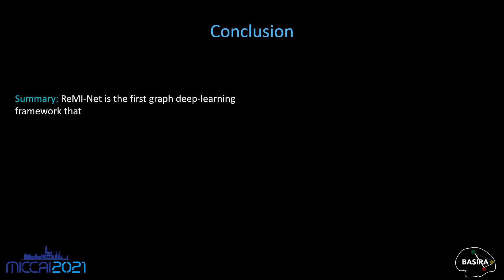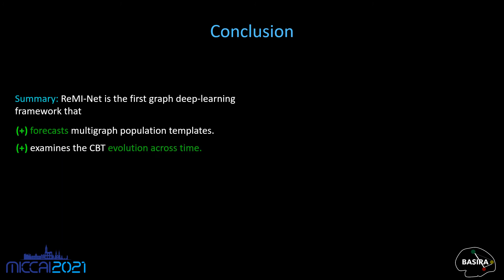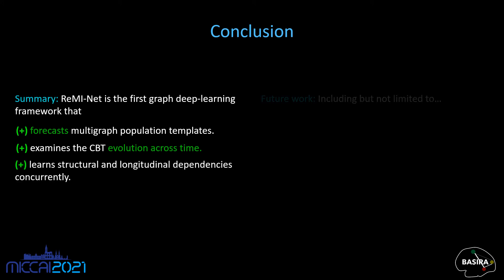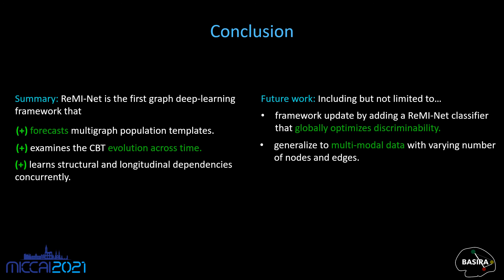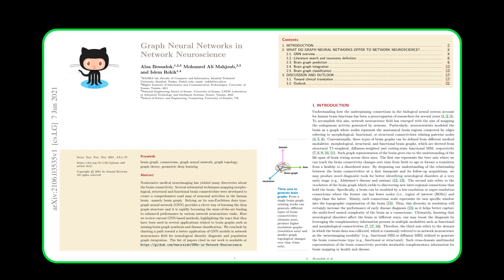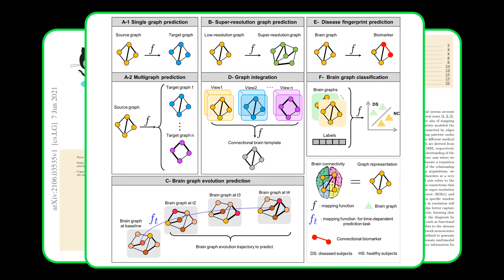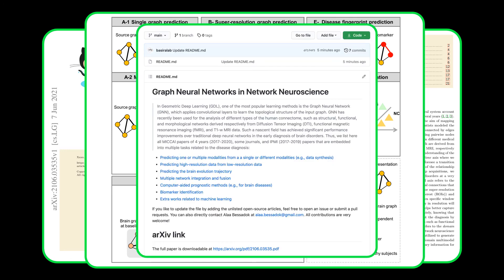To summarize, REMINET is the first graph deep learning framework that forecasts multigraph population templates, examines CBT evolution across time, and learns structural and longitudinal dependencies concurrently. In our future work, we will aim to enrich our framework by adding an individual-level classifier that globally optimizes the discriminability of the CBT. We will also evaluate our proposed method on different datasets using other modalities such as diffusion, structural, and functional brain networks, and forecast CBTs for other neurodegenerative diseases. Please feel free to check our recent review paper on GNNs in Network Neuroscience covering recent GNN architectures for brain connectivity integration, classification, super resolution, and more. You can also visit the GitHub repo of the paper.